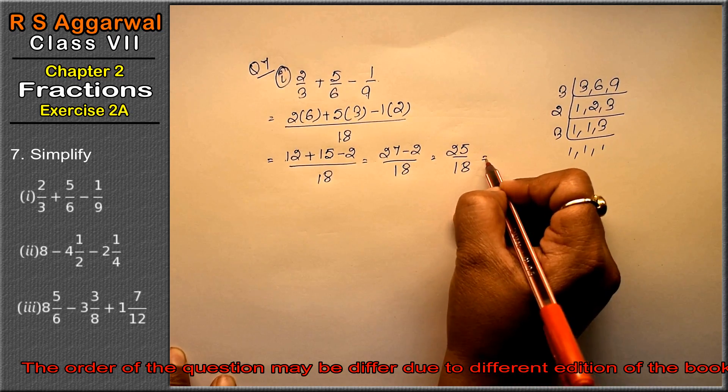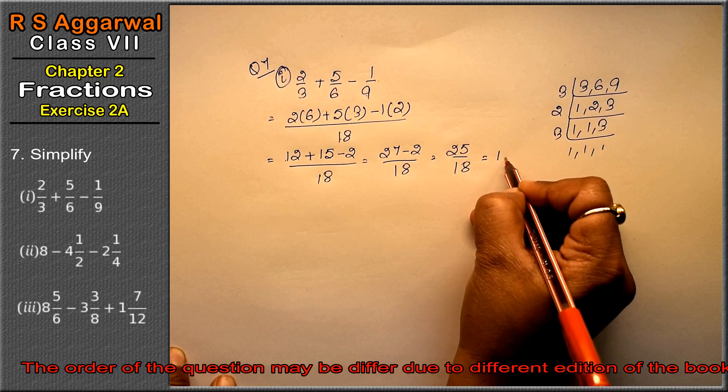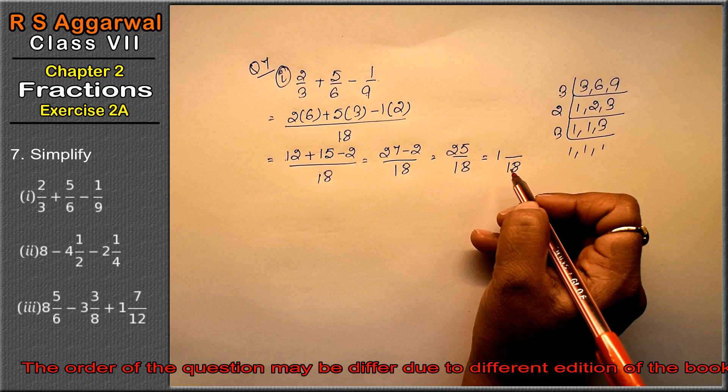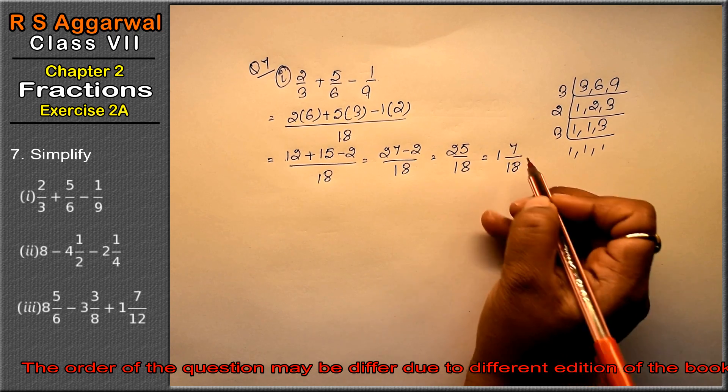If you want, you can do it in mixed fraction. 18, 1 is 18, 19, 20, 21, 22, 23, 24, 25. So 1 whole 7 upon 18 is the answer.